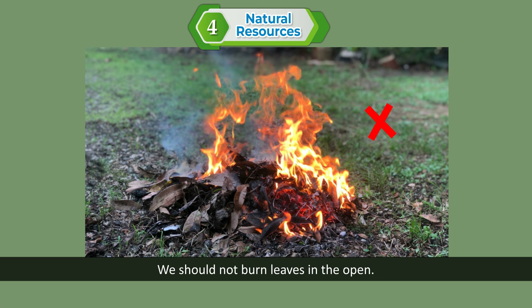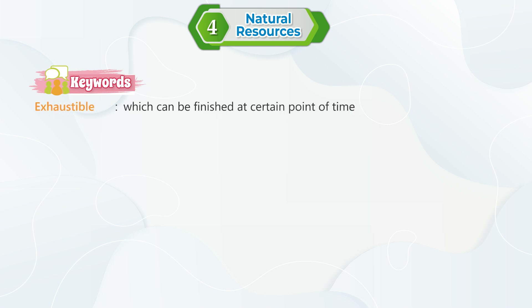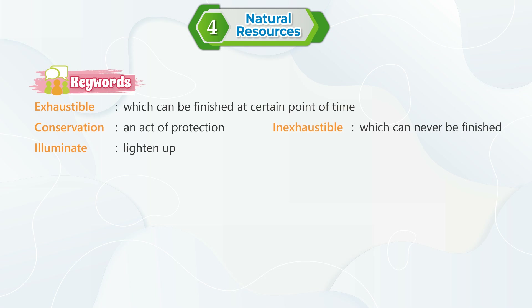We should not burn leaves in the open. Key words: Exhaustible — which can be finished at a certain point of time. Conservation — an act of protection. Illuminate — lighten up. Inexhaustible — which can never be finished. Refineries — factories where oil is refined.